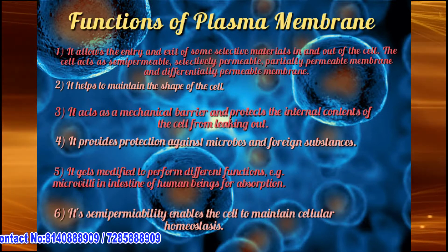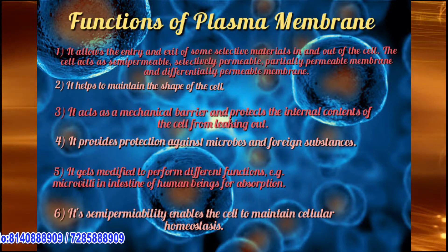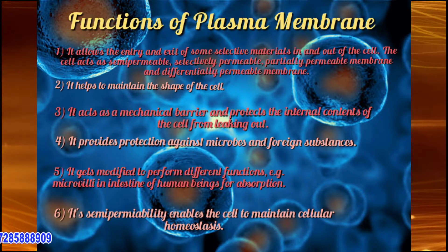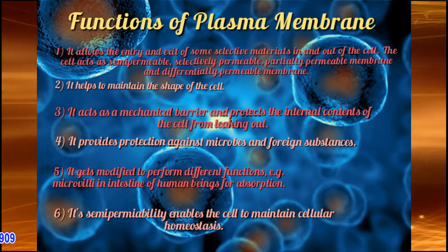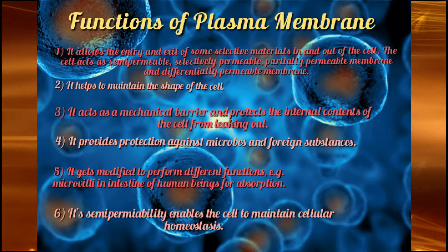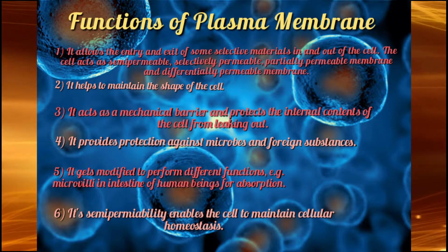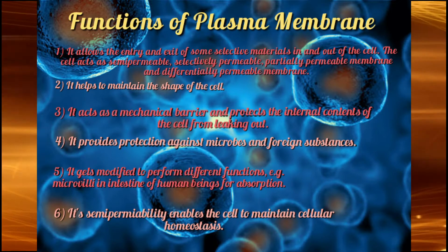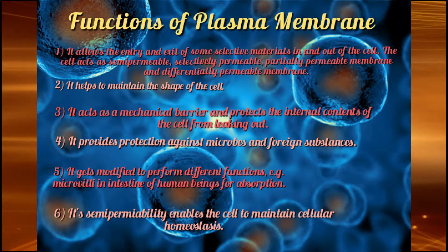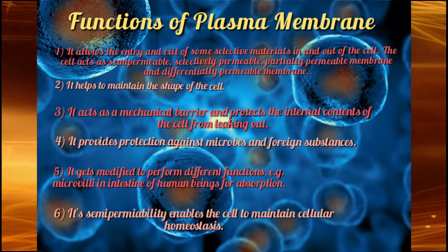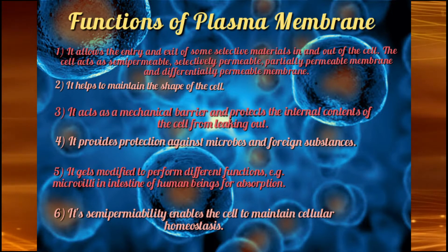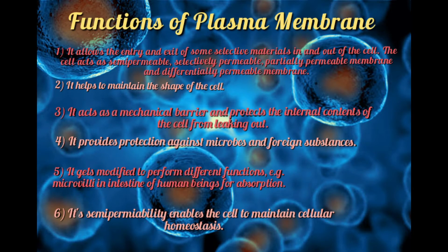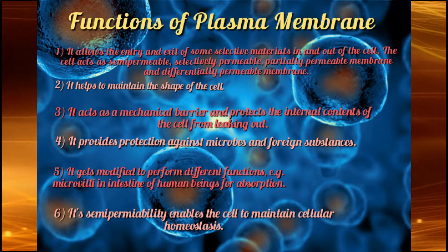Plasma membrane also provides protection against microbes and foreign substances — cell membrane cell organs ko micro-organisms, infections, aur doosri harmful cheezon se bachaye rakhta hai. Next, it gets modified to perform different functions — alag-alag functions karne ke liye cell membrane apne aap ko modify karta rehta hai. Among all these functions, transport of substances is the main function of cell membrane.